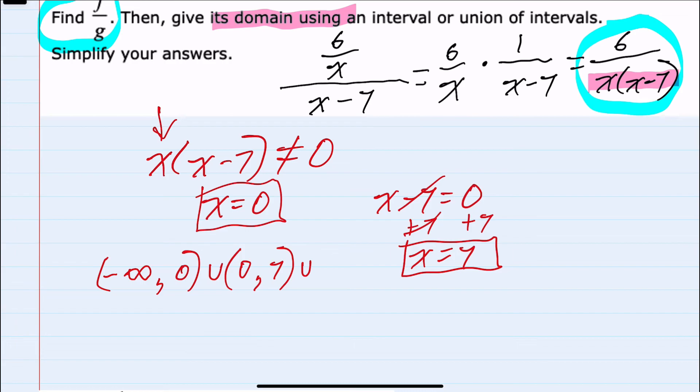And then another union, it could be any number larger than 7. So 7 to positive infinity. This would be our domain where we have excluded 0 and 7.